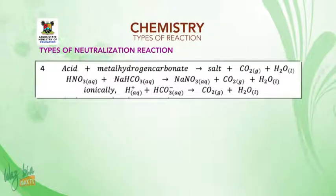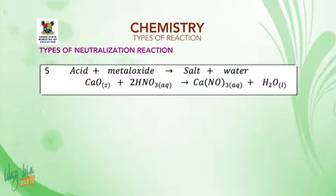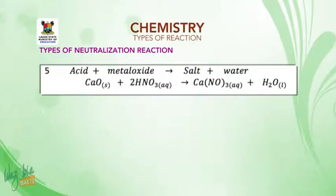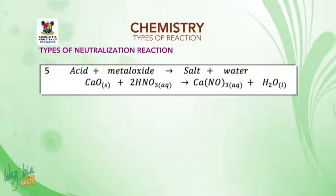Finally, acid and metal oxide give salt and water. For example, calcium oxide plus nitric acid gives calcium nitrate plus H₂O.